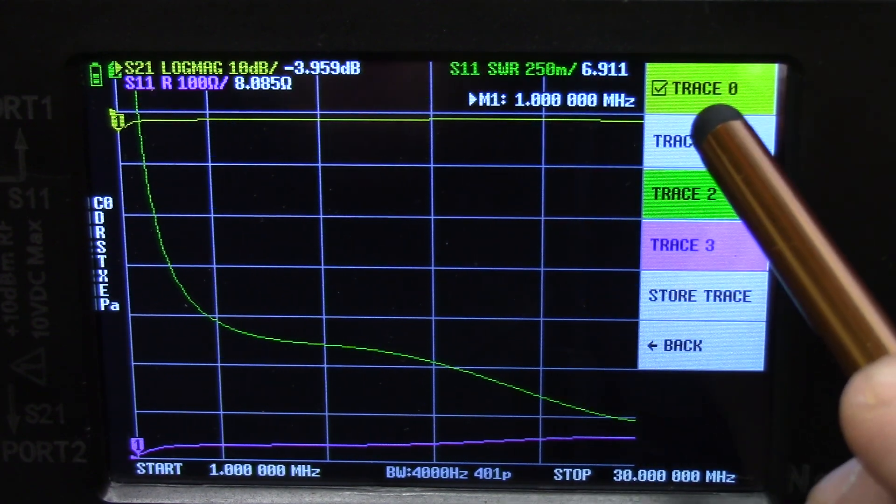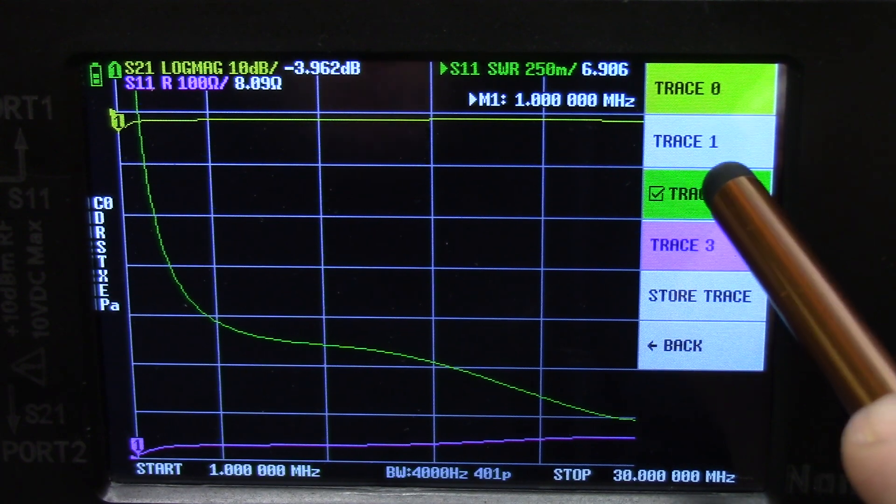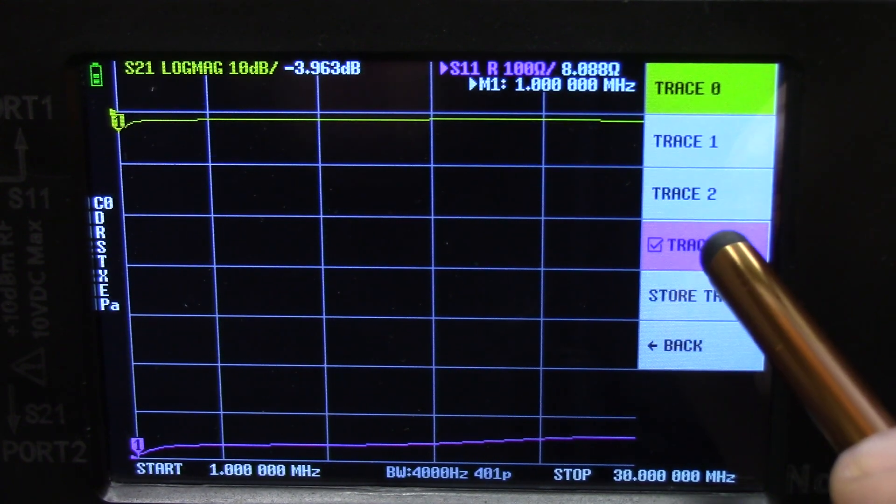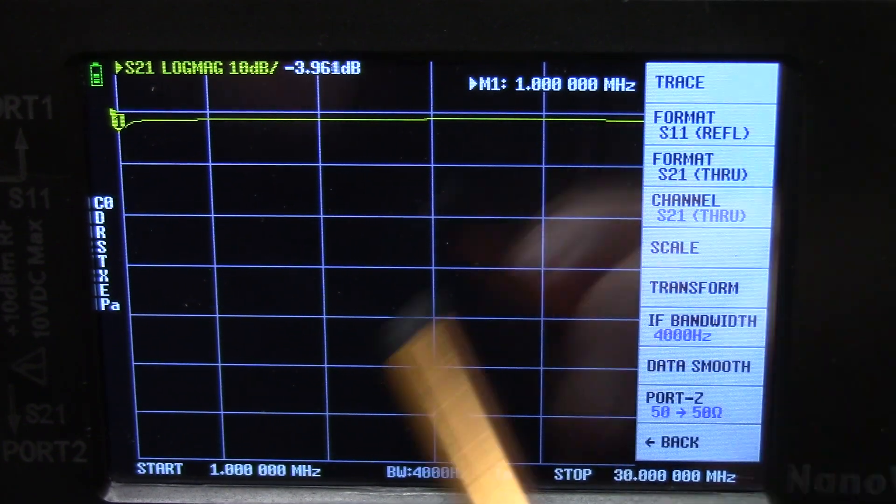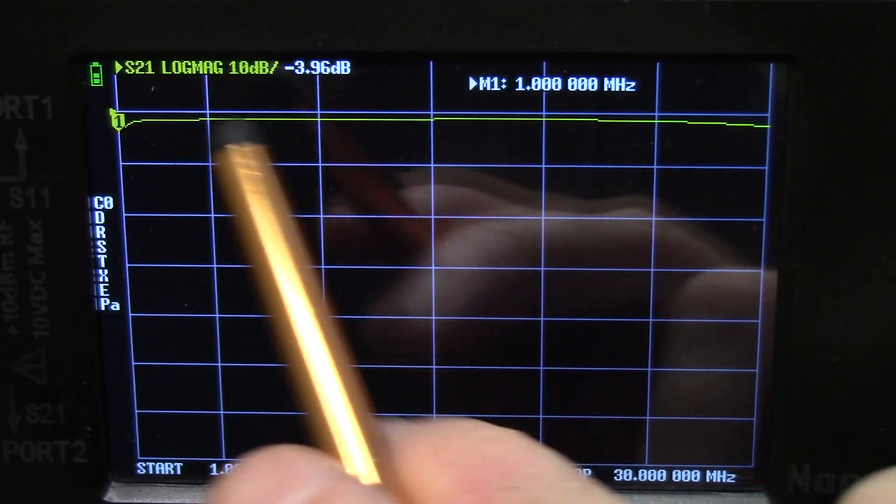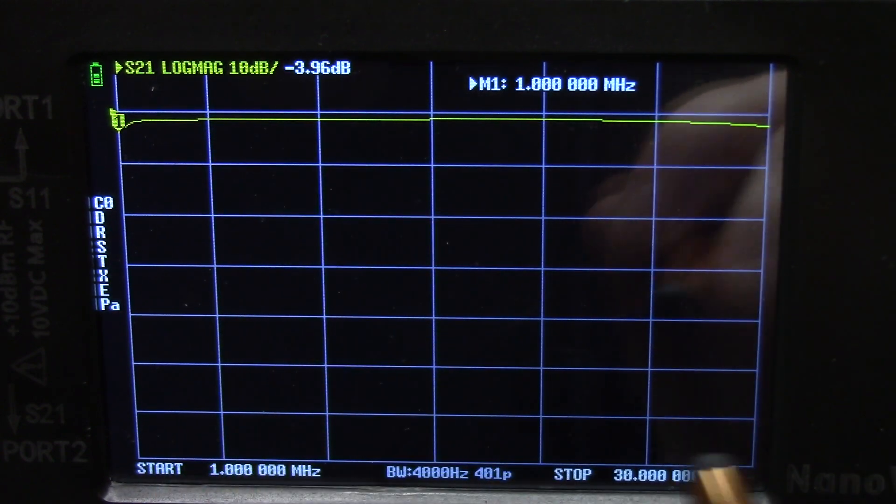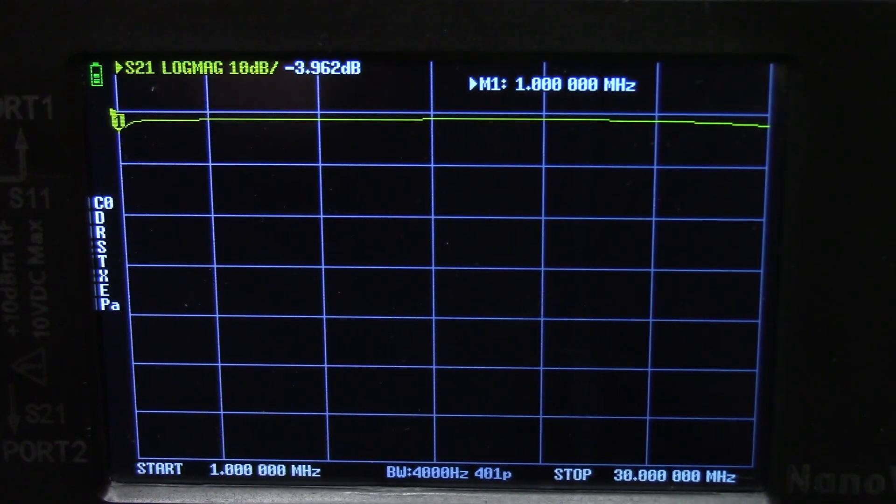So we really just want to turn off all the rest of them for this particular reading. So we'll turn off trace one, tap on it, turn off trace two, turn off trace three. So now the only trace that's being displayed is S21 Log Mag. And that's what we're going to use to measure our insertion loss.